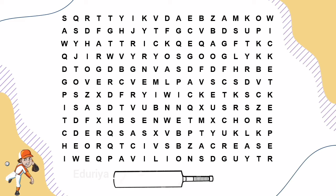The three vertical posts that support the bails and form the wicket. The answer is Stump.